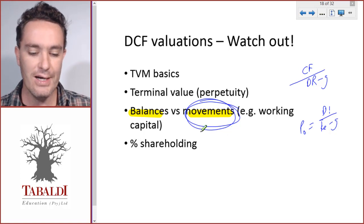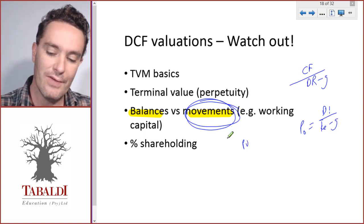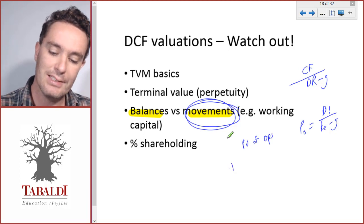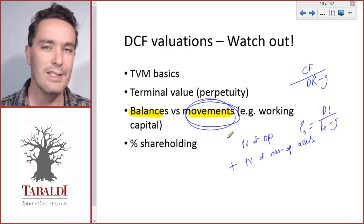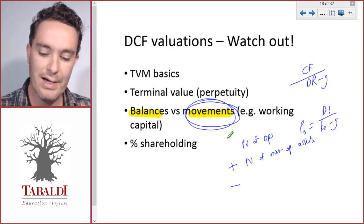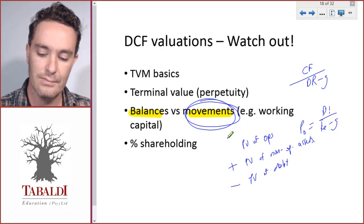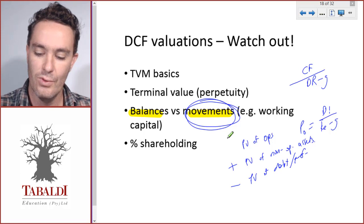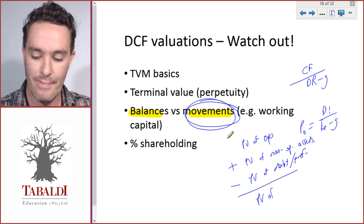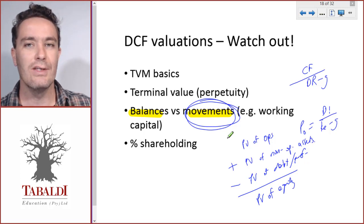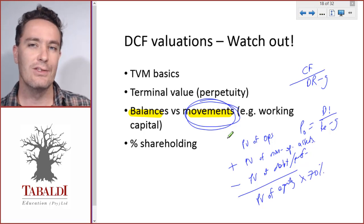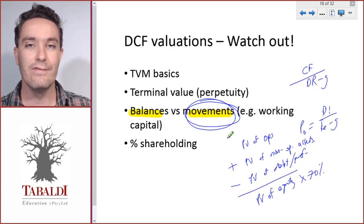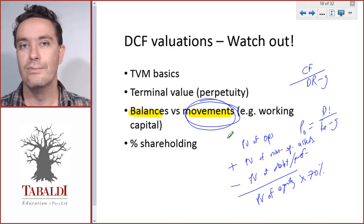Finally, once we have the present value of operations plus the present value of non-operating assets (investment property, etc.) minus the present value of debt and preferences, we get the present value of equity. Then watch out — if they ask you to value a 70% share of the company, multiply by 70% to get the value you are willing to pay for that 70% share. Those are the key things students regularly make mistakes on.